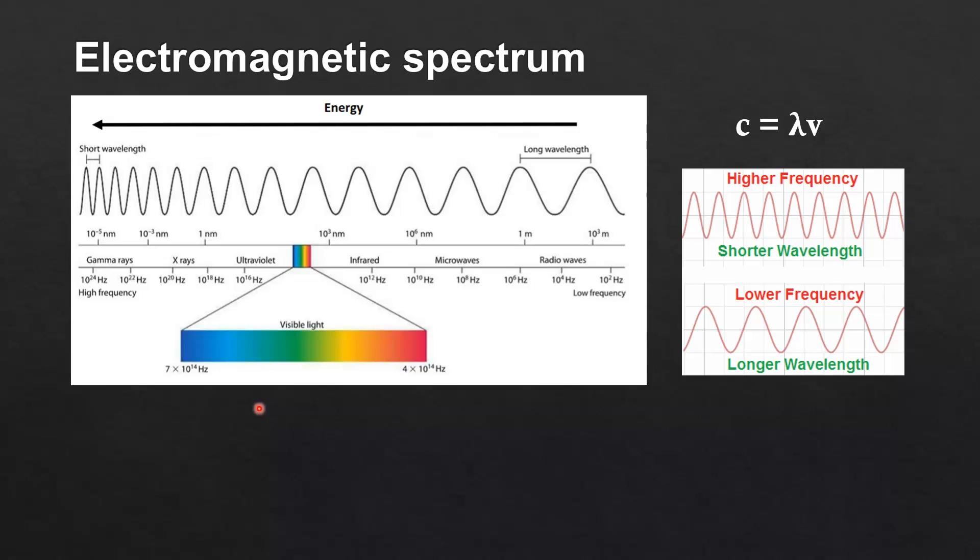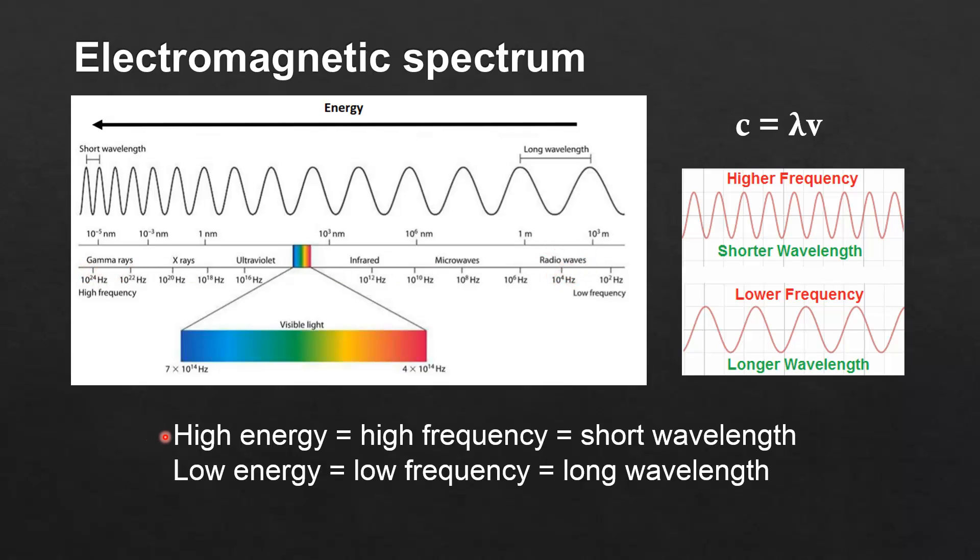Next we'll have a look at energy. Energy increases from right to left. So gamma rays are high energy, radio waves are low energy. The relationship is high energy equals high frequency equals short wavelength, low energy equals low frequency equals long wavelength.